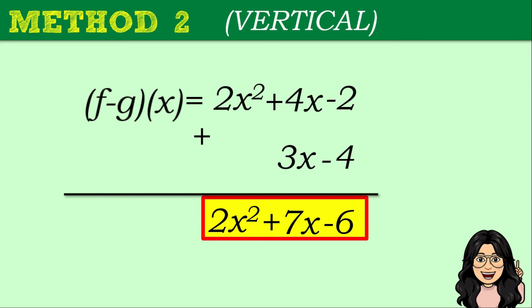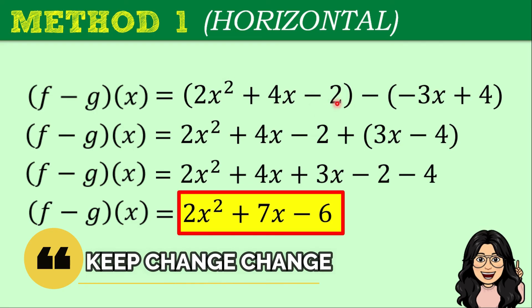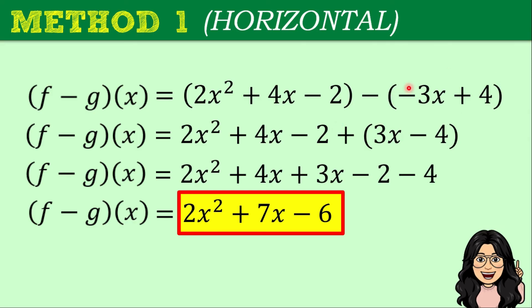For clarification, here is Method 1, the horizontal method. The first expression in parentheses is f of x and the second is g of x. Applying Keep, Change, Change: keep f of x, change minus to plus, and change the signs of g of x so we have 3x minus 4. Combining like terms: 2x squared is alone so copy it; 4x plus 3x gives 7x; negative 2 plus negative 4 gives negative 6. The answer is exactly the same as Method 2: 2x squared plus 7x minus 6.